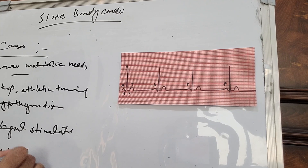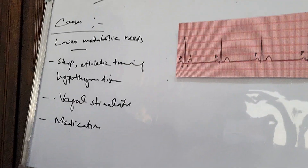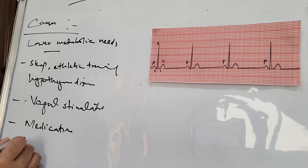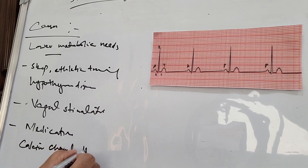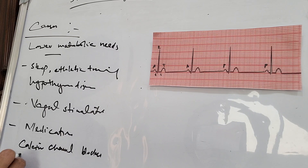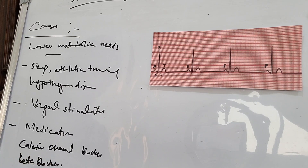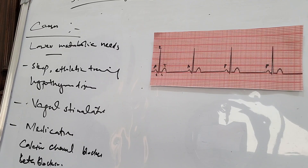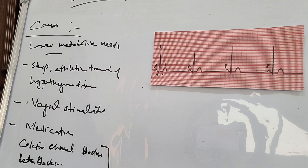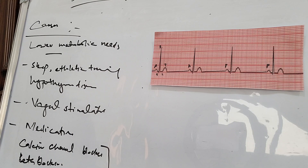Some medications can also cause sinus bradycardia. Which medications? Calcium channel blockers, beta blockers, and amiodarone. These are the same medicines we give in sinus tachycardia — calcium channel blockers, beta blockers, and amiodarone — and they will decrease the heart rate, making them a cause of sinus bradycardia.